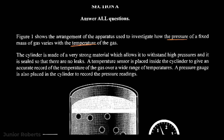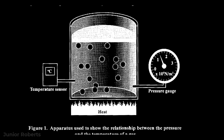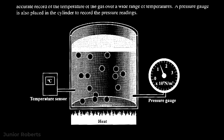The cylinder is made of a very strong material which allows it to withstand high pressures, and it is sealed so that there are no leaks. A temperature sensor is placed inside the cylinder to give an accurate record of the temperature of the gas over a wide range of temperatures. A pressure gauge is also placed in the cylinder to record the pressure readings. So we have the container which is sealed, a pressure gauge, a temperature sensor, and a fixed mass of gas trapped inside, which is being heated.